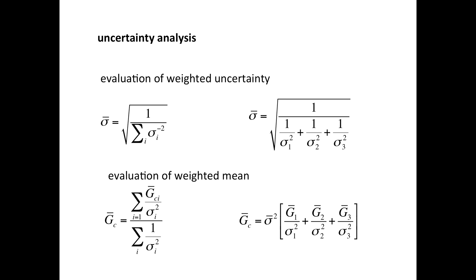Once you have that value, you can use it in the evaluation of the weighted mean, which is this uncertainty squared times the sum of each individual adhesion divided by its associated standard deviation squared.